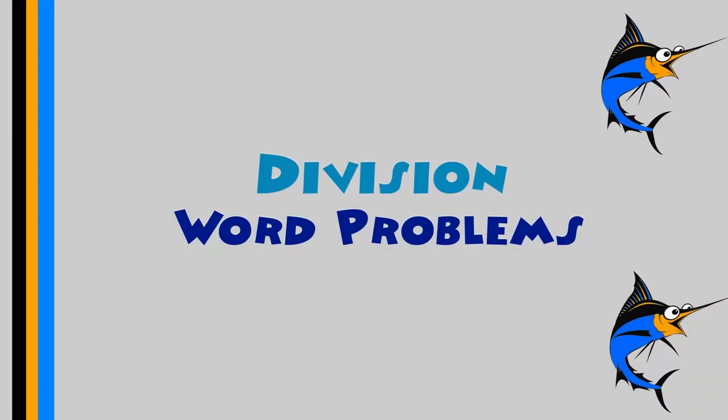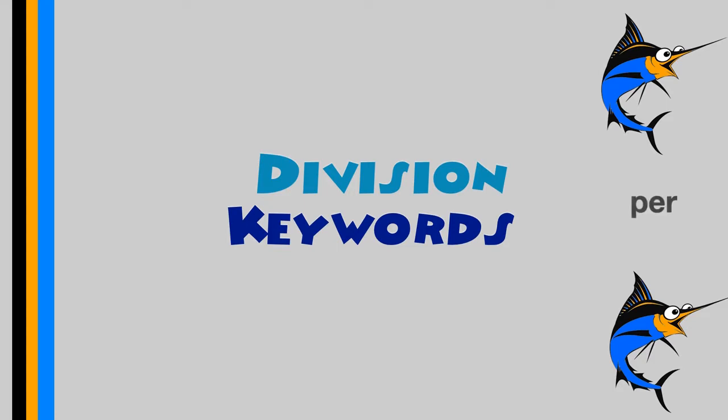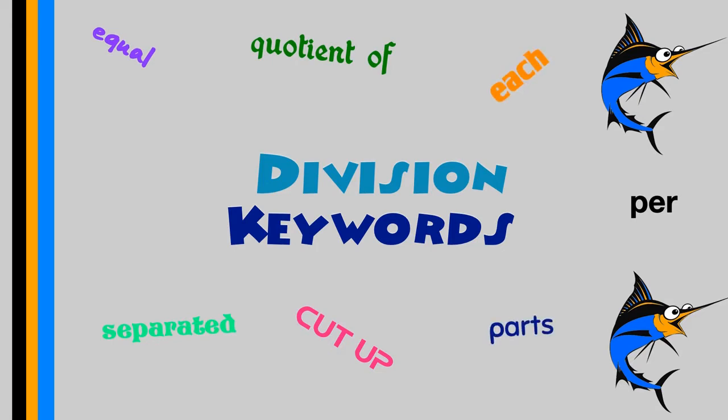Let's focus more on these division word problems. But to focus on division word problems, we have to identify some of those division keywords. These are words that signify or let us know that we need to divide. Some of these words are per, quotient of, cut up, separated, equal, each, parts. All of these and more signify the operation of division.